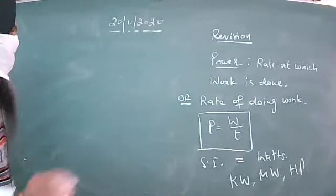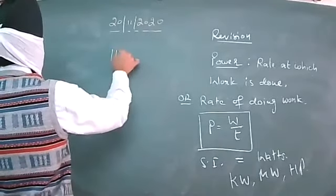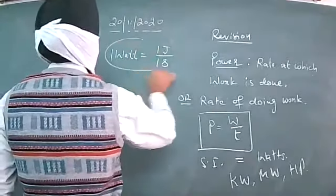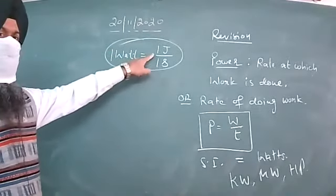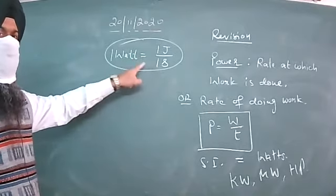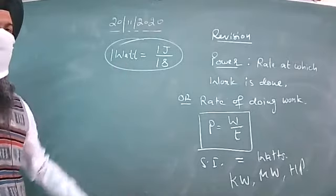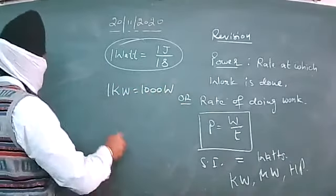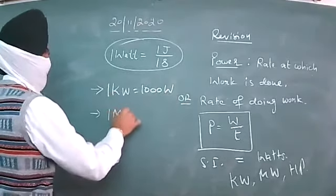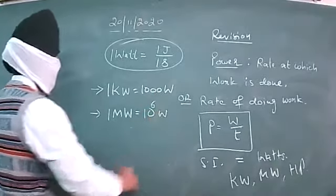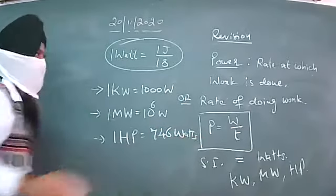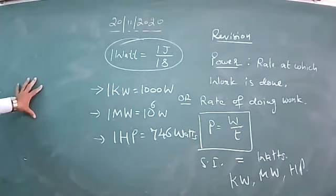The power of a source is called one watt if one joule of work is done in one second. If some agent does one joule of work in one second, the power of that agent equals one watt. Also, one kilowatt equals one thousand watts, one megawatt equals 10 to the power 6 watts, and one horsepower equals 746 watts. Keep all these relationships in mind.